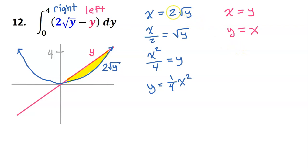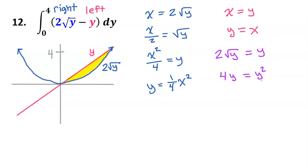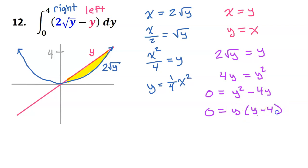Let's prove that the intersection occurs at y equals 4. Setting 2 radical y equal to y, squaring both sides gives 4y equals y squared. Subtracting 4y from both sides: 0 equals y squared minus 4y. Factoring out y gives y times (y minus 4). Using the zero product property, y equals 0 and y equals 4. These are the y values of the two intersection points, which is why they integrated from 0 to 4.